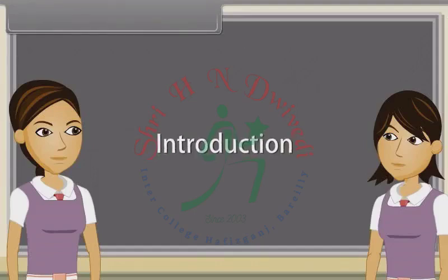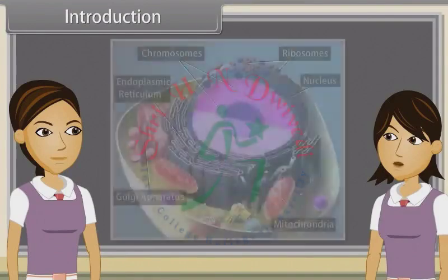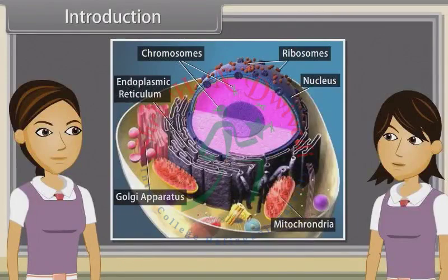Hey Ankita, we have discussed the structure of the endomembrane system, endoplasmic reticulum, Golgi apparatus, lysosomes, vacuoles, mitochondria, plastids, and ribosomes.